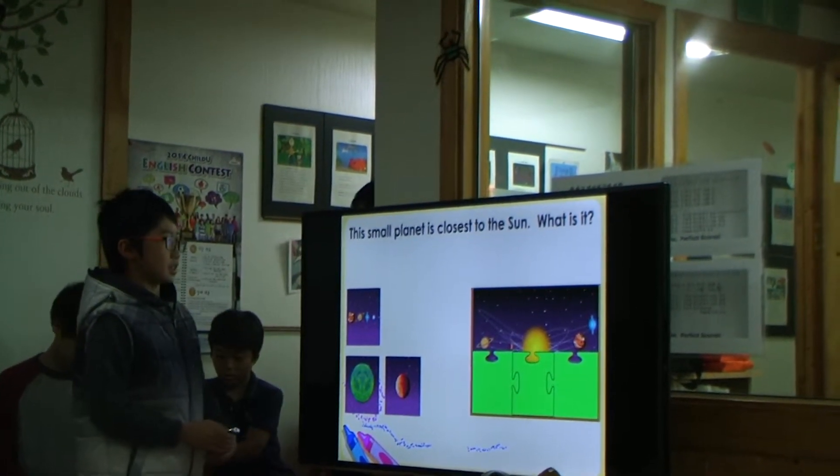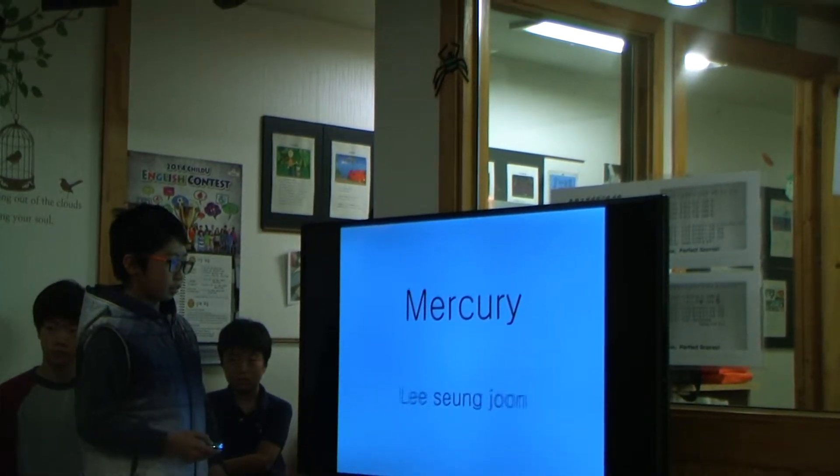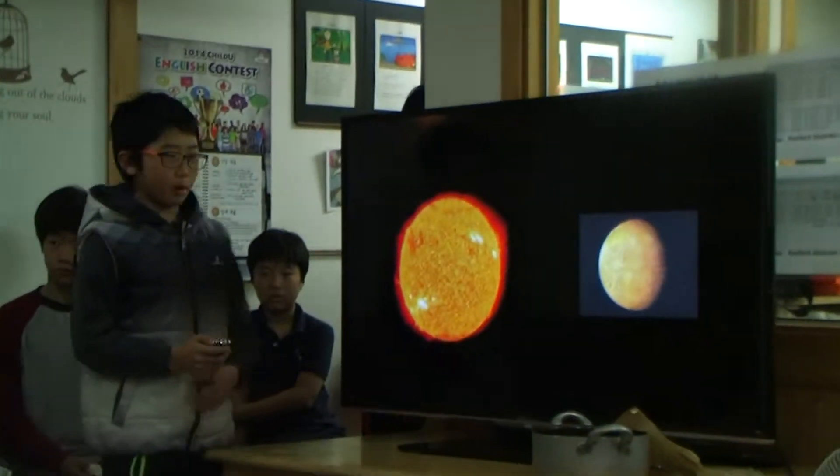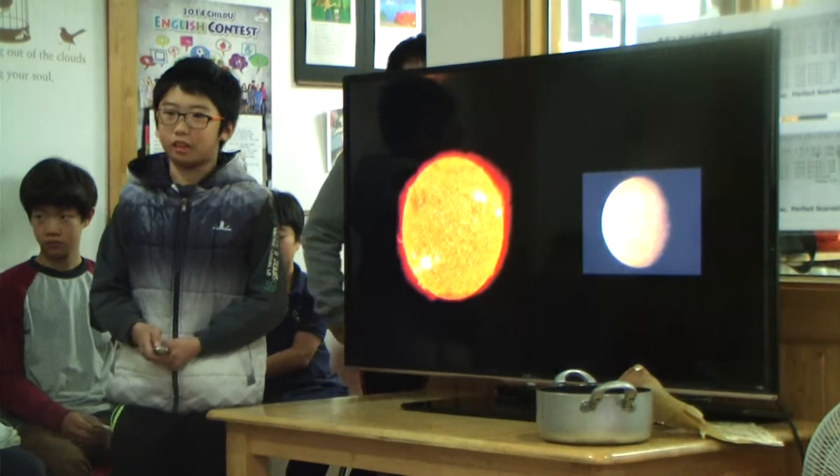This small planet is closest to the sun. What is it? Mercury! When Mercury is in sunlight, it is very hot, hotter than any temperature on Earth.